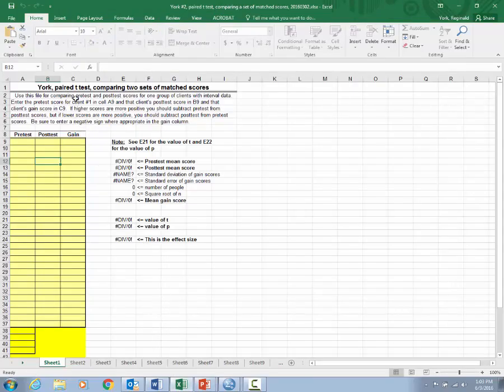This is when you're using the paired t-test because you're comparing two sets of matched scores. That is to say you have pre-test scores for a group of clients and you have matched post-test scores meaning this pre-test and this post-test are from the same person.